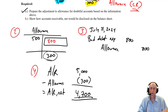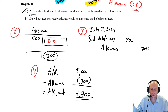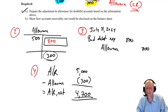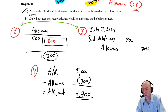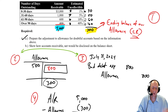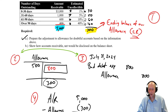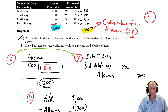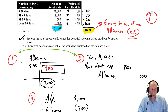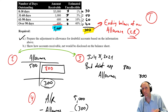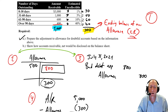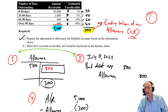The big difference between this method and the percentage of sales method is in the order of steps. With the aging of receivables method — the balance sheet method — you compute a percentage of aging receivables, update the allowance T-account, then do the journal entry, then compute net AR. With the percentage of sales method, you calculate a percentage of sales, do the journal entry right away, then update the T-account. Those two middle steps are swapped. Once you've got a handle on one, you should understand the other.